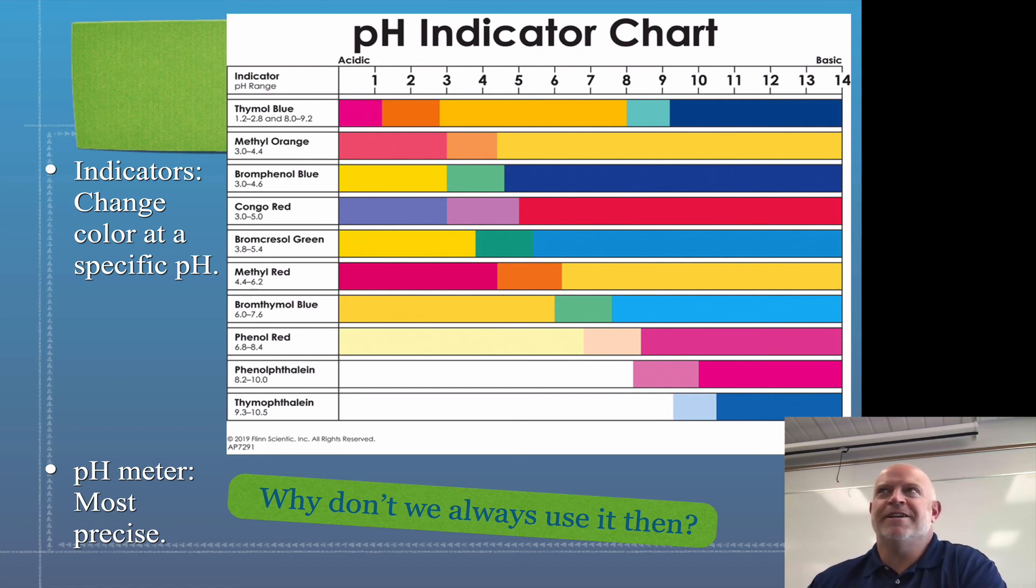And they're kind of finicky where you have to keep them stored in a buffer solution all their lives if they're not being used. So they're kind of like that fancy stuff that you have in your house, like maybe that fancy china or that fancy thing where, yeah, it's awesome, but it takes a lot to pull it out. So you use pH meters when you need the precision, but if you don't need the precision, it's much easier, faster, and cheaper to use pH paper or an indicator solution.